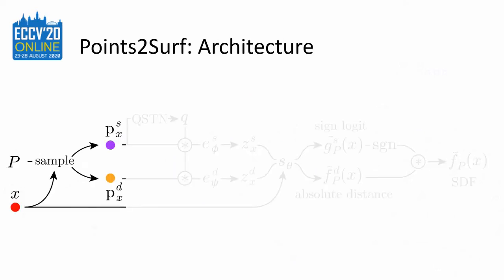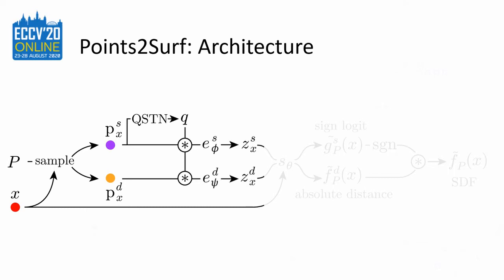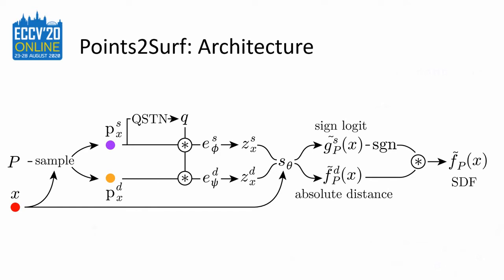This is our architecture. We start with the two subsamples mentioned before — the upper one is the global and the lower one is the local subsample. We take the QSDN from PCP-Net to normalize the orientation of the global subset, then apply the learned rotation on both subsamples. We use two point transformers from PCP-Net to convert each rotated subset individually to feature vectors. We concatenate these feature vectors and put them in a multi-layer perceptron. This MLP outputs two floats: the sign and the absolute distance.